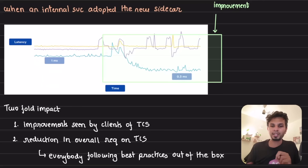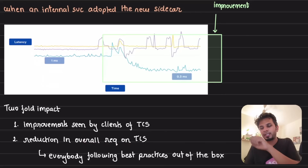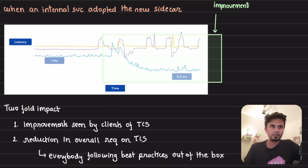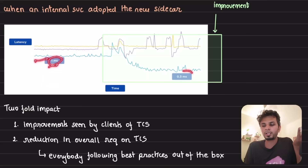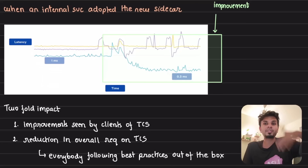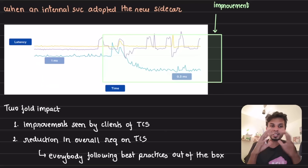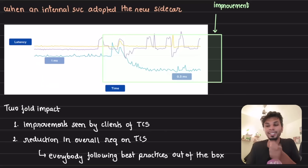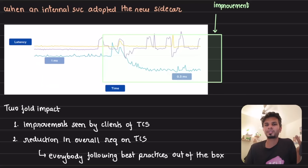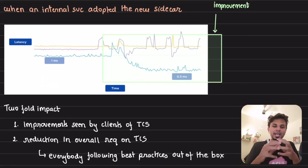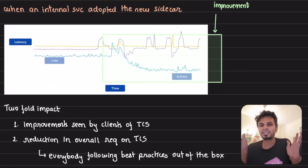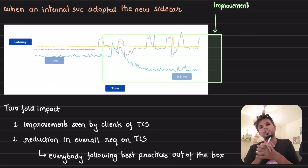More importantly, there was an overall reduction in the total number of requests reaching the TCS service. Even teams getting one millisecond could reduce that by 70% by following all possible best practices. Now everybody using the sidecar pattern — owned by the TCS team with all best practices baked in — dramatically reduced the total request load on TCS. You get benefits not just on perceived latency but also on total request volume, because everybody follows best practices now.